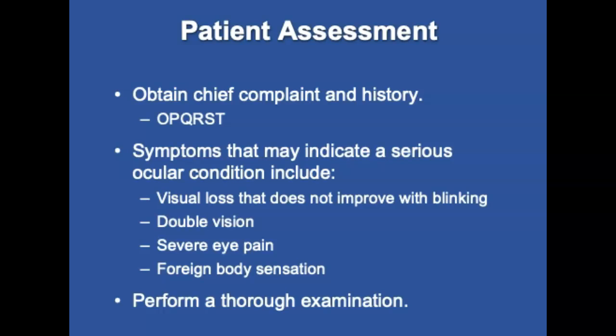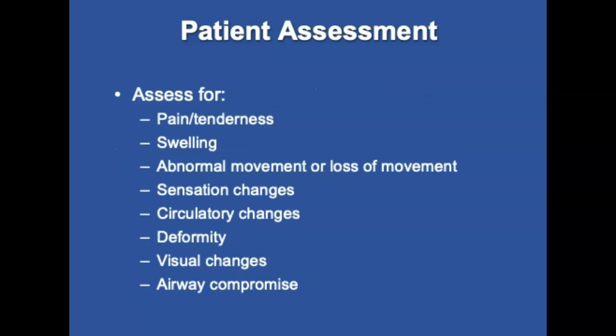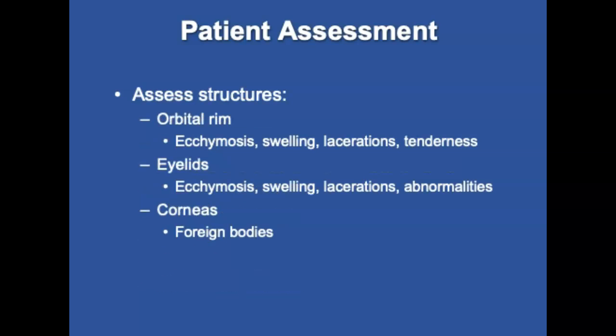Provide emotional care and obtain the chief complaint and history using OPQRST — such as when symptoms began, what symptoms are experienced, and whether both eyes are affected. Symptoms that may indicate a serious ocular condition include vision loss that does not improve when blinking, double vision, eye pain, or a foreign body sensation. Perform a thorough exam using standard precautions, avoid aggravating the affected area, and assess for pain, swelling, abnormal movement, sensation, circulatory changes, deformity, vision changes, and airway compromise.